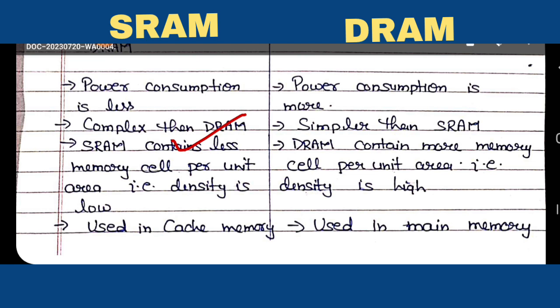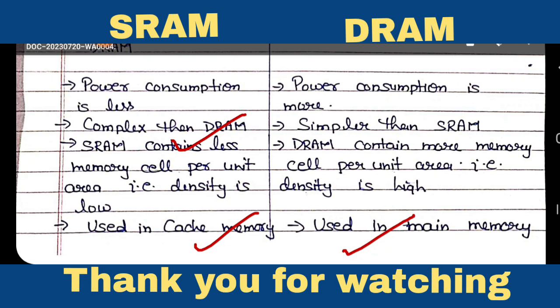SRAM is faster, does not need refreshing, and data is stored for a long time. That is why SRAM is used in cache memory, and dynamic RAM is used in main memory. This covers all the differences between static RAM and dynamic RAM.